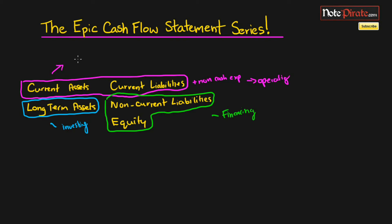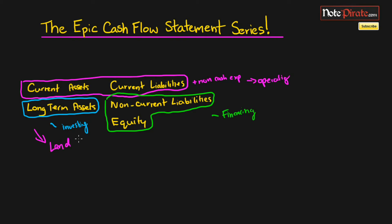The way this works is if we're adjusting for an account like accounts receivable, we know that accounts receivable is a current asset, so we're going to be adjusting for it in the operating activities section. If we're adjusting for an account like bonds payable, we know that it's a non-current liability, and therefore it goes into the financing activities section. If we're adjusting for a long-term asset like land, it's going to go in the investing activities section. This is a quick way to dissect all the accounts on a balance sheet and decide where they go on the cash flow statement.